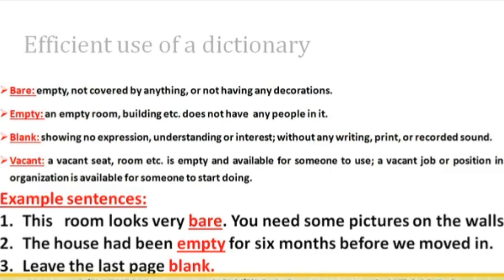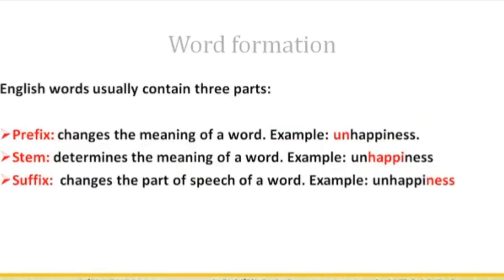Here are some example sentences: sentence one — 'This room looks very bad, you need some pictures on the walls.' Sentence two — 'The house had been empty for six months before we moved in.' Sentence three — 'Leave the last page blank.' Sentence four — 'Only a few apartments were still vacant.' You can see that the dictionary helps us understand the context better.